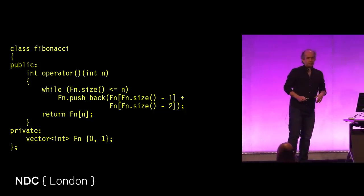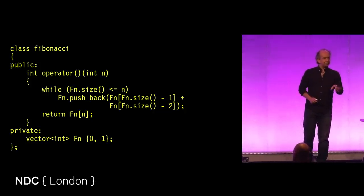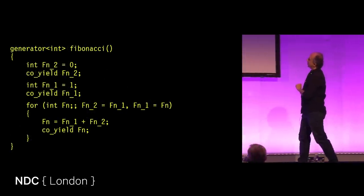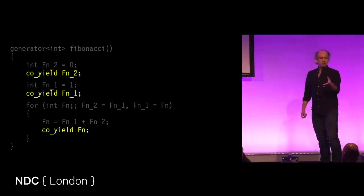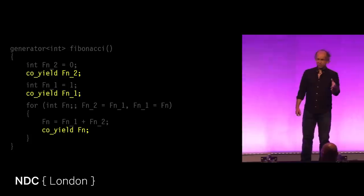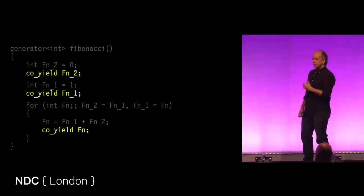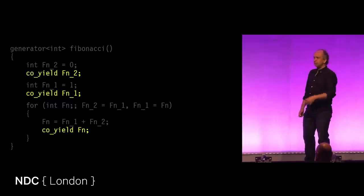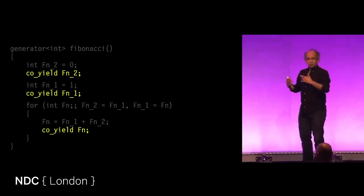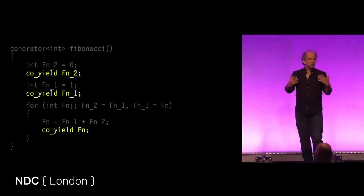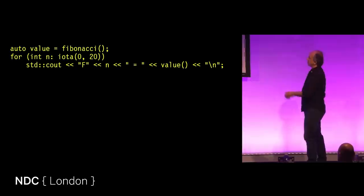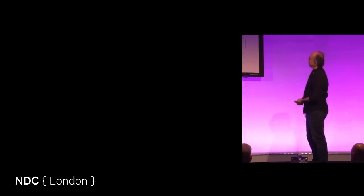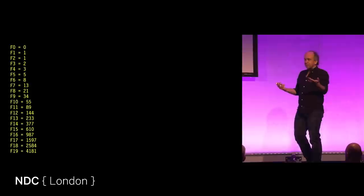We have a generator returning ints for Fibonacci, and then we've got a magic yield keyword — and because it's C++, you can't have everything simple, so you put 'co' in front of it. This is looking really good. There's a logical flow: yield the first two values and then go around the loop. You don't need any remembered object state because it's just your local variables. Nobody else can see them — you just reveal it as you go. You can print out this stuff and use it in a for-loop to get the first 20 Fibonacci numbers. That was fantastic. If I write it in Python, it looks pretty much the same.